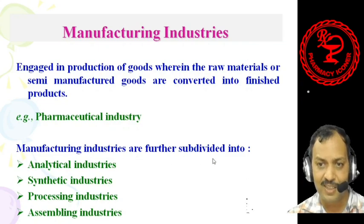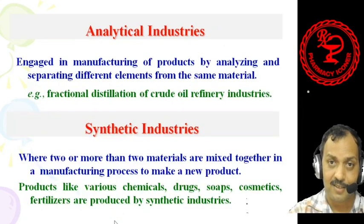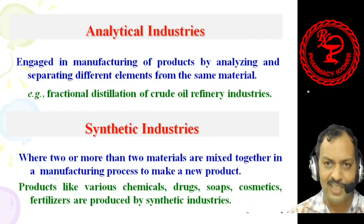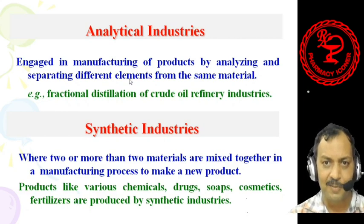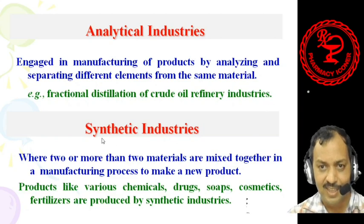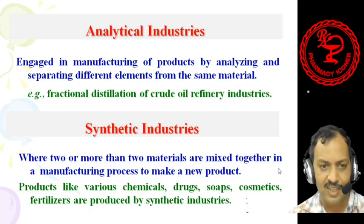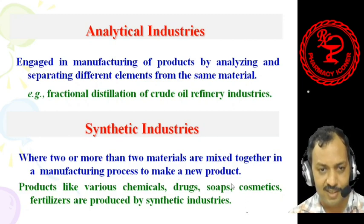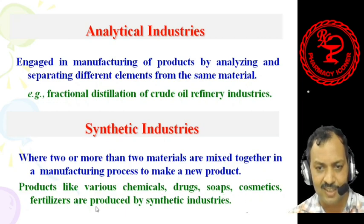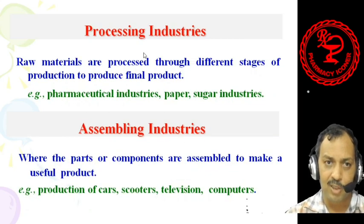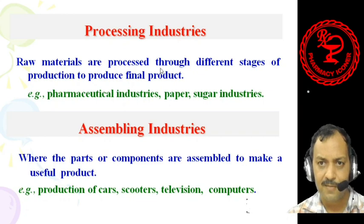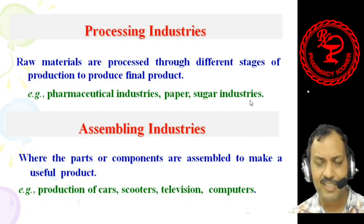Manufacturing industries are further subdivided into four categories: analytical industries, synthetic industries, processing industries, and assembling industries. Analytical industries manufacture products by analyzing and separating different elements from the same material — for example, fractional distillation in crude oil refinery industries. Synthetic industries are those where two or more materials are mixed together in a manufacturing process to make a new product — examples include chemicals, drugs, soaps, cosmetics, and fertilizers. Processing industries involve processing through different stages of production to produce the final product — pharmaceutical, paper, and sugar industries are examples.